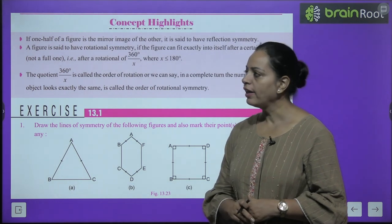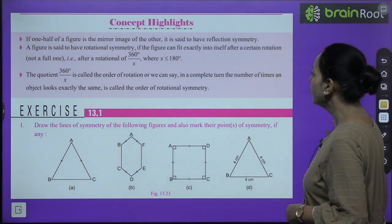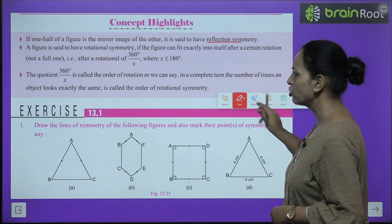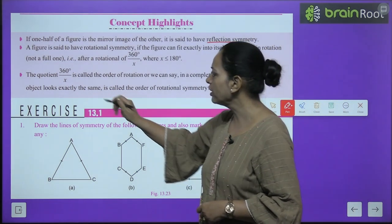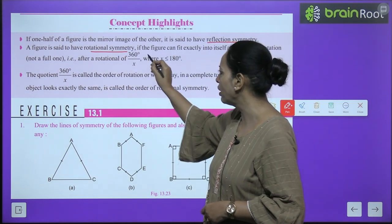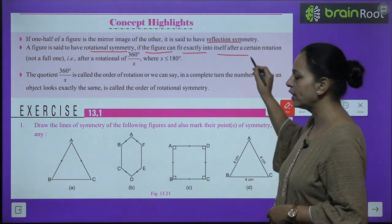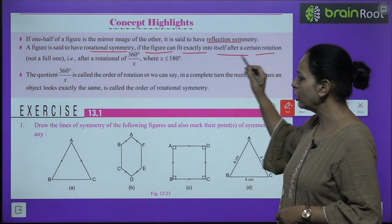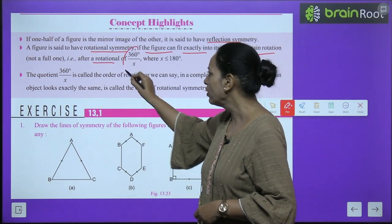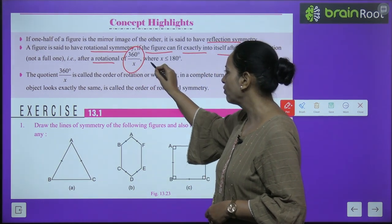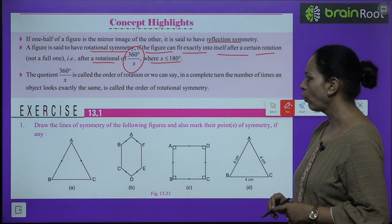Concept highlight: If one half of a figure is the mirror image of the other, it is said to have reflection symmetry. A figure is said to have rotational symmetry if the figure can fit exactly into itself after a certain rotation — not a full one — that is, after a rotation of (360/x) degrees, where x is less than or equal to 180.